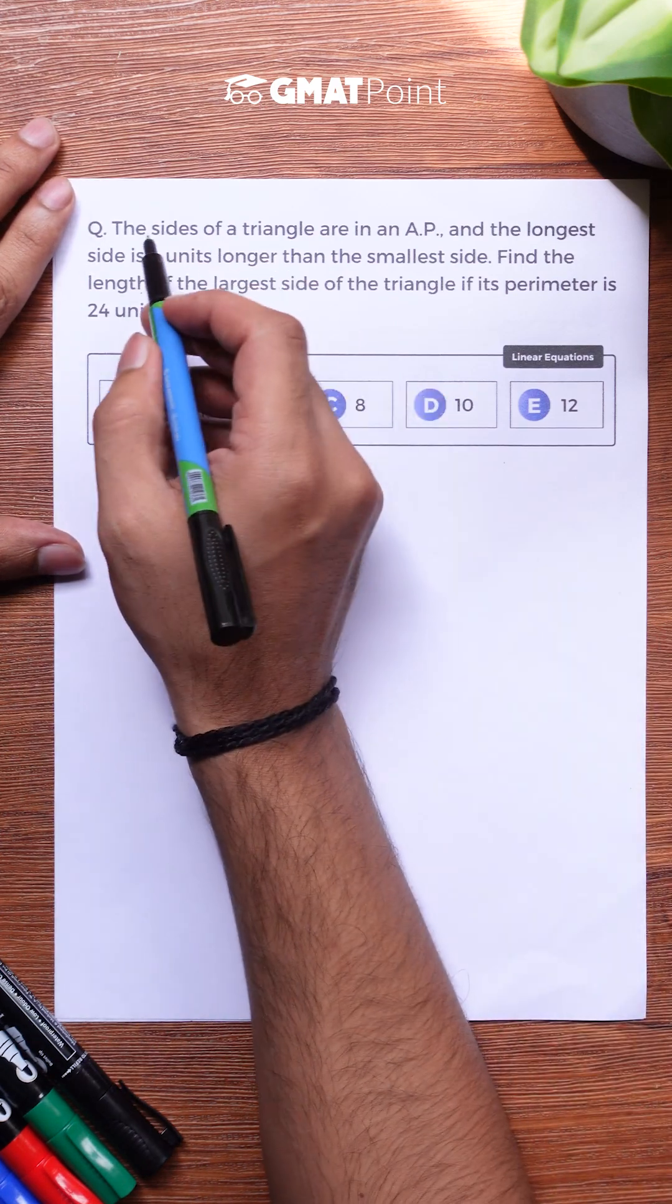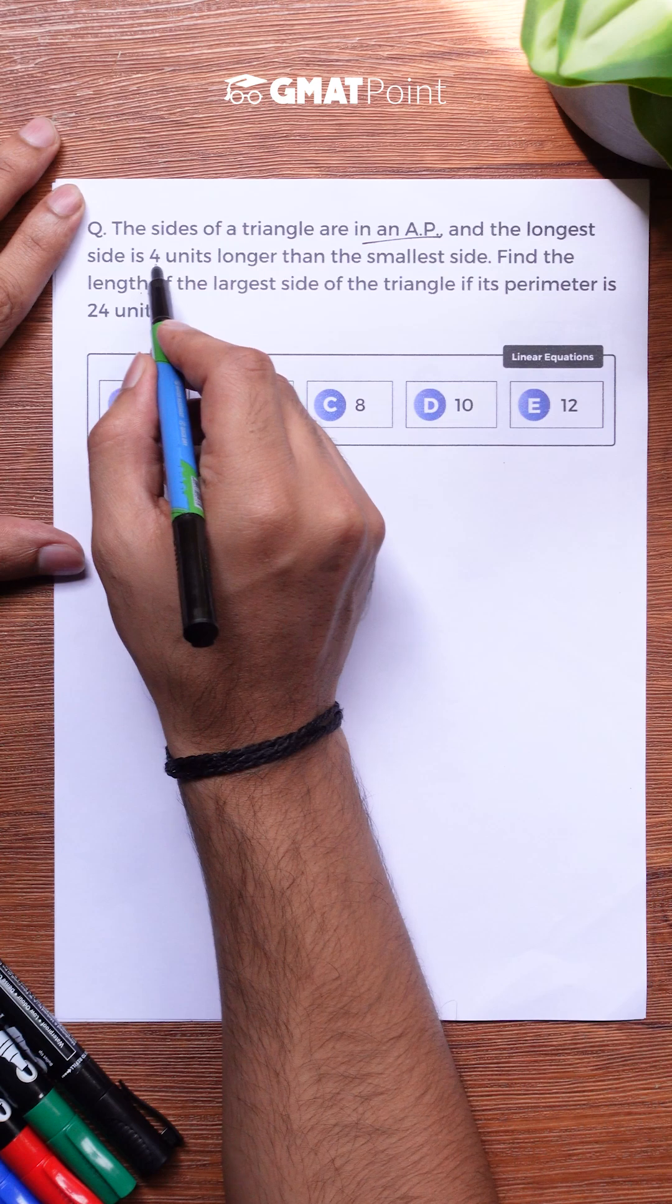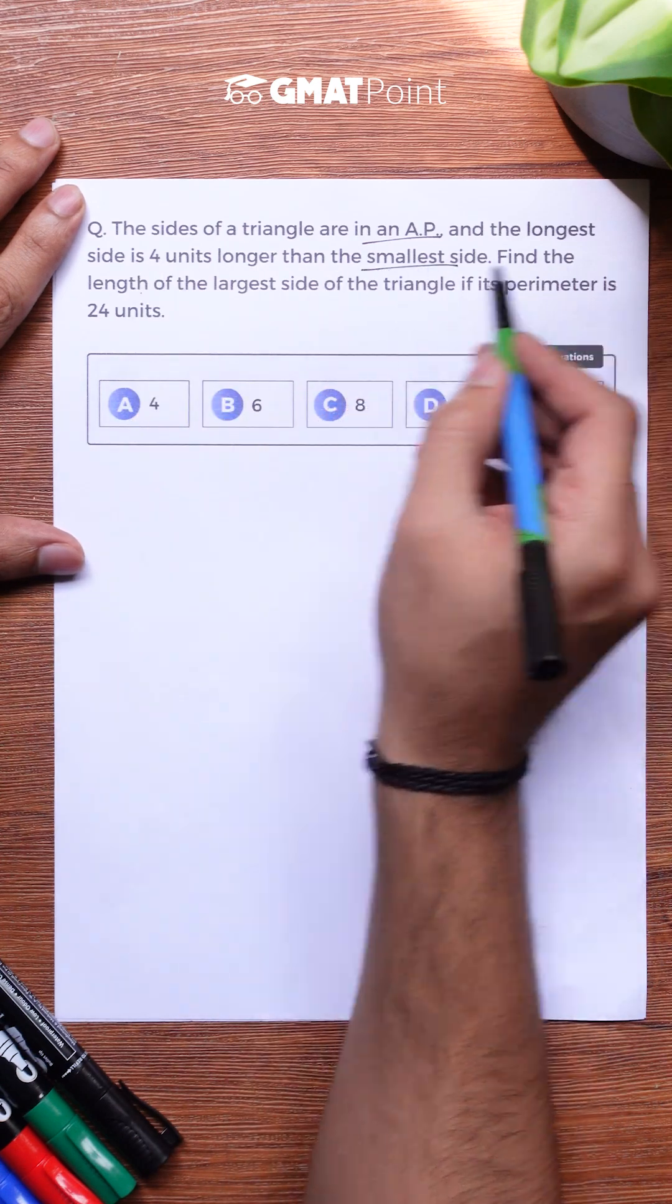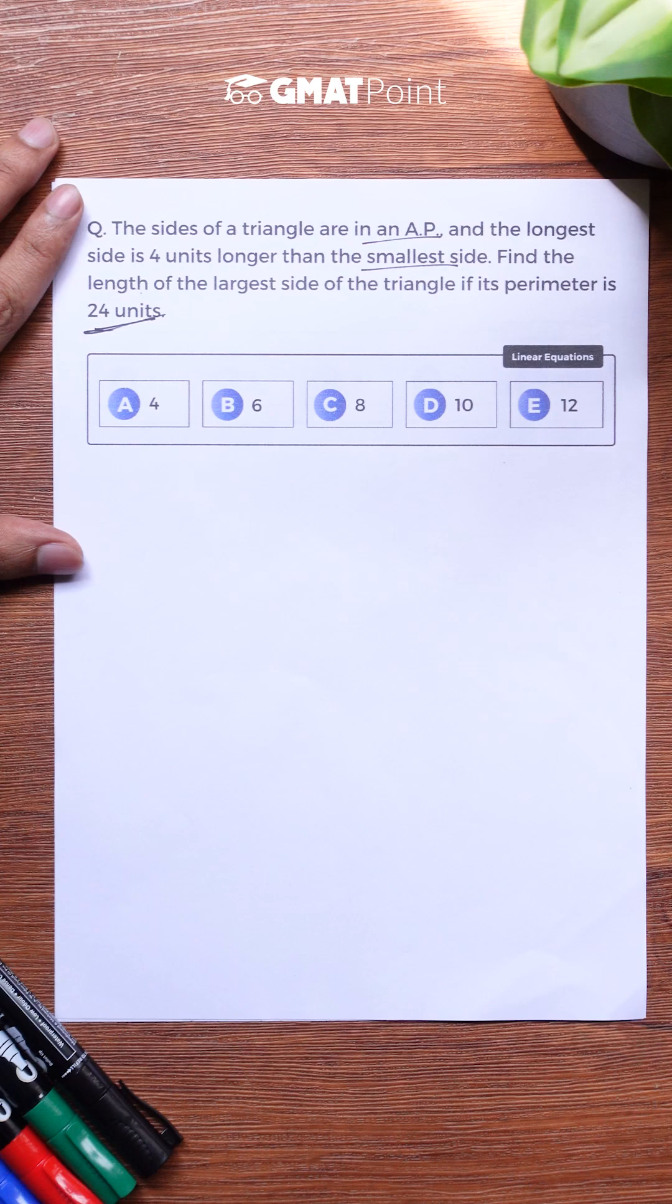Let us try to solve this question under 1 minute. The sides of a triangle are in an AP and the longest side is 4 units longer than the smallest side. Find the length of the largest side of the triangle if its perimeter is 24 units.